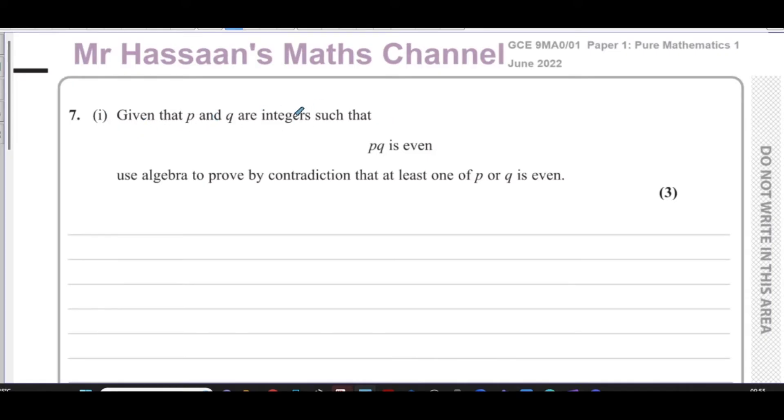So it says, given that P and Q are integers such that PQ is even, the product of P and Q is even, use algebra to prove by contradiction that at least one of P or Q is even. So when you're doing proof by contradiction, you've got to first of all assume what contradicts the statement.